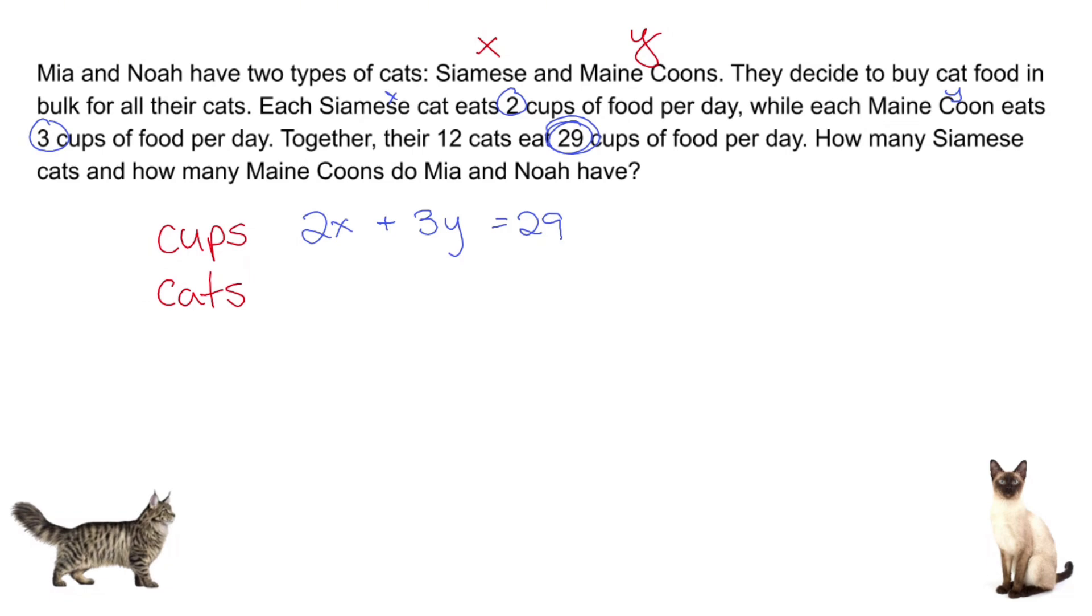That's the tricky part, coming up with these equations. Now what's my other equation going to be? Well, how many cats they have in total. The Siamese cats and the Maine Coon cats add up to 12 cats total: X plus Y equals 12.